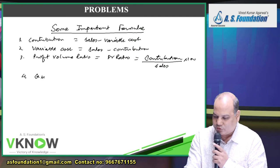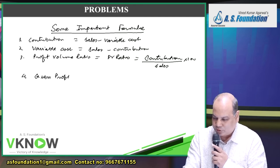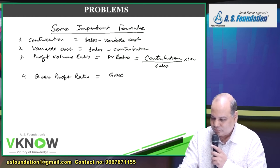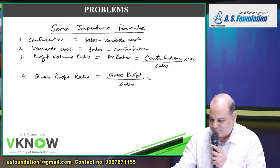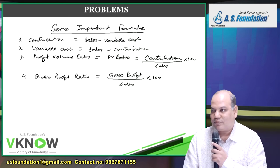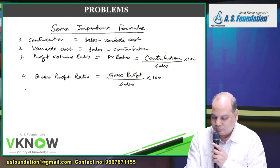The next formula is Gross Profit Ratio = Gross Profit / Sales × 100. Then, Cost of Goods Sold = Sales minus Gross Profit. Alternatively, Gross Profit = Sales minus Cost of Goods Sold — depending on how the data is given, you move from gross profit to COGS or vice versa.